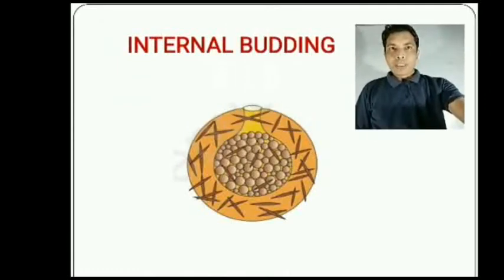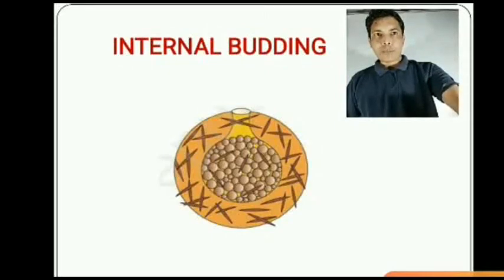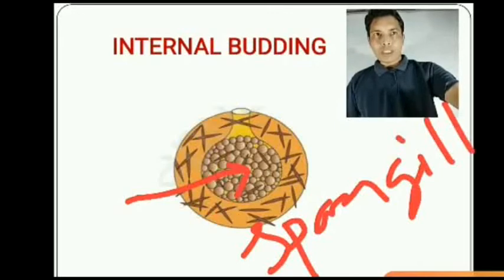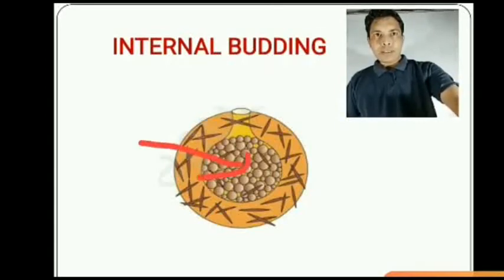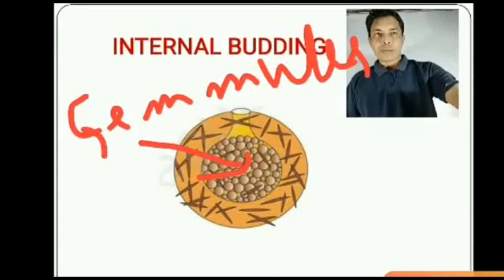Internal budding is also known as gemmulation. This is seen in sponges. The internal buds are called gemmules — spelled G-E-M-M-U-L-E-S. Gemmules are internal buds found in sponges.